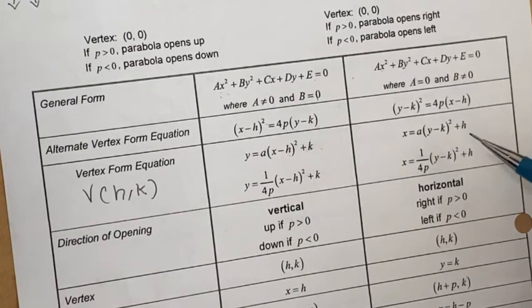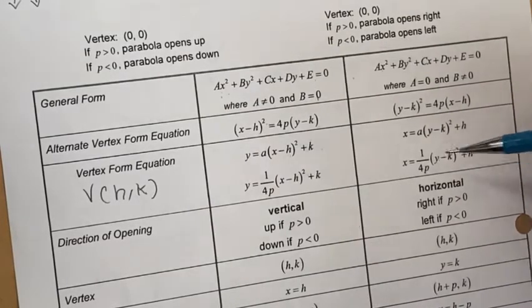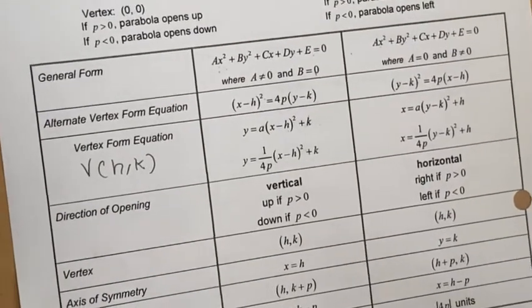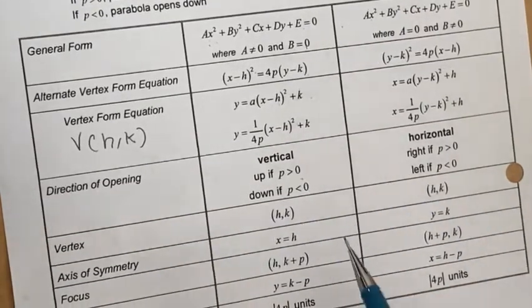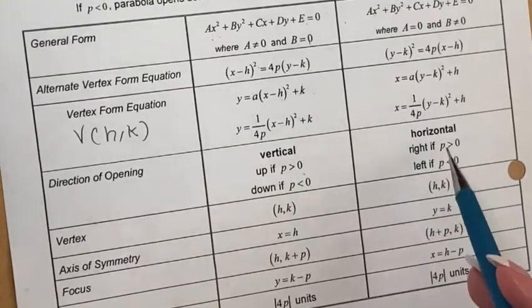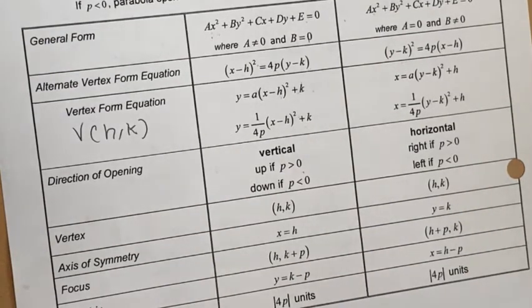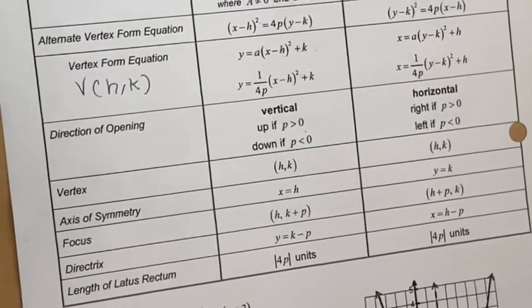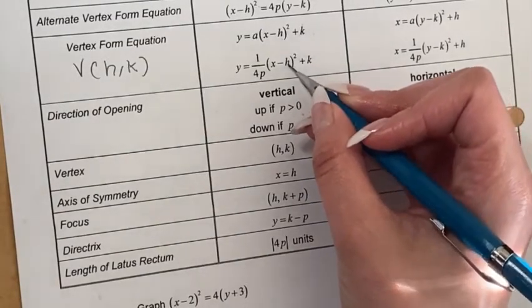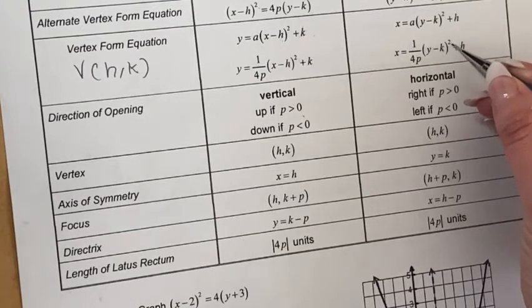For the sideways parabola, you square the y and have x alone on the other side. In both forms, the vertex is (h, k). Be careful about which variable is raised to the power of two — the vertex's x-coordinate comes from the term with x, and the y-coordinate from the term with y.